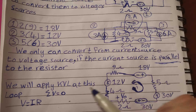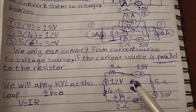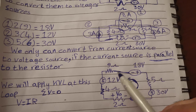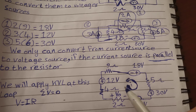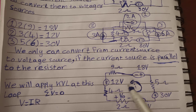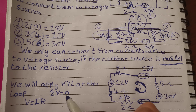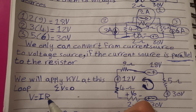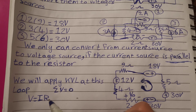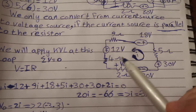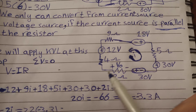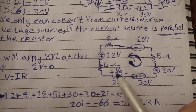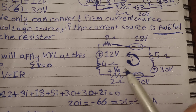We will apply KVL at this loop. We assume the current flows counter-clockwise. Sigma V equals zero, and V equals I multiplied by R — that is Ohm's law. So we write 2i, since the current goes from high potential to low potential.